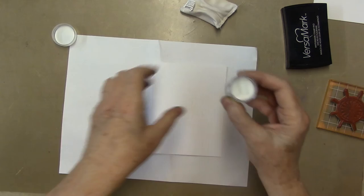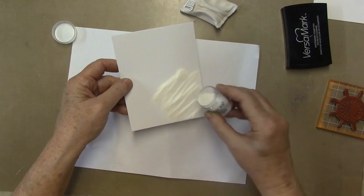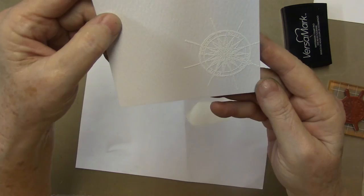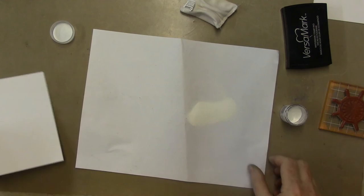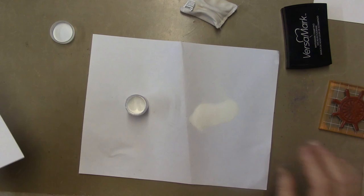I'm using Wow opaque white embossing powder, regular, not super fine or anything. What you do is just sprinkle that. I understand you probably aren't going to see much of this. Can you see? Yeah, you can see white on white, perfect for videos. I'm just going to funnel this powder back.